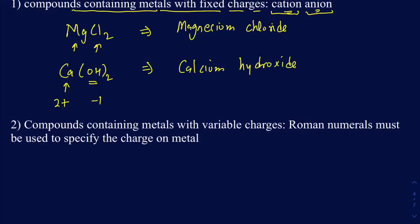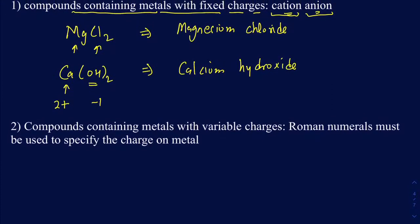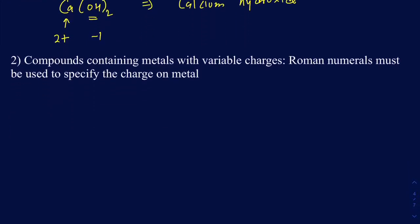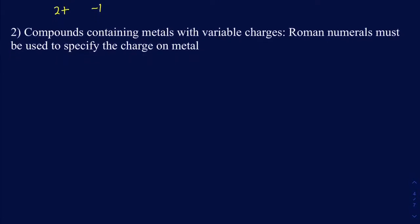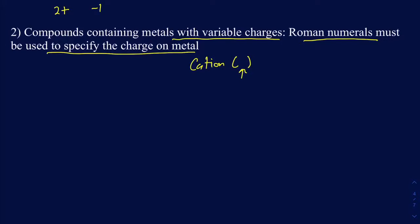Remember: the question could ask you to go either way — given a formula, figure out the name; or given a name, figure out the formula. Make sure you can do both. Now, what about compounds containing metals with variable charges? That's where you use Roman numerals in parentheses to specify the charge on the metal.